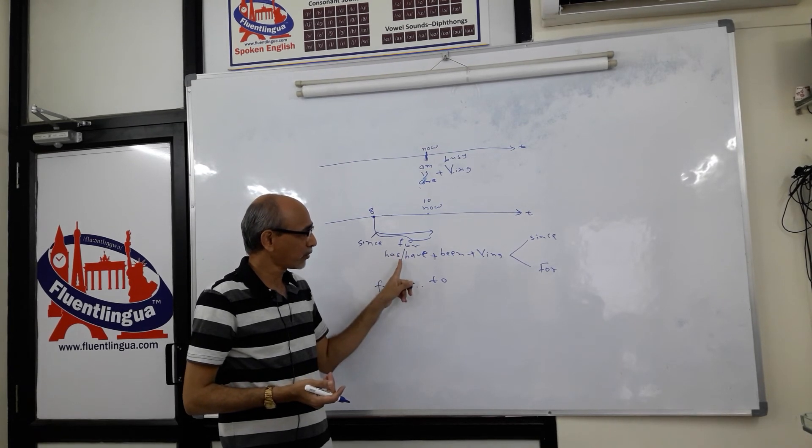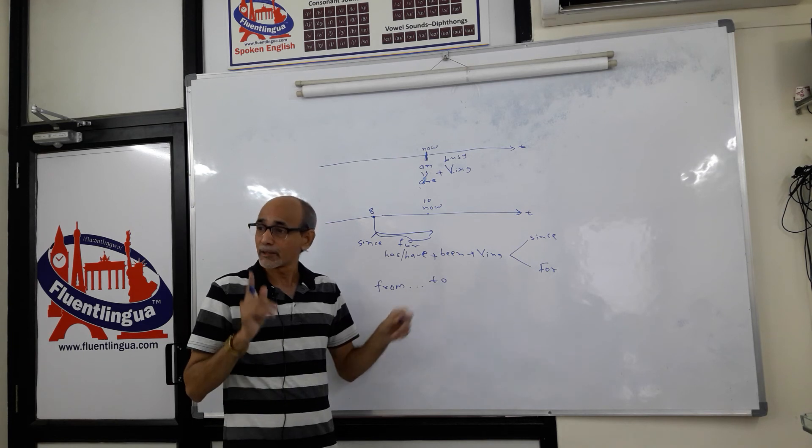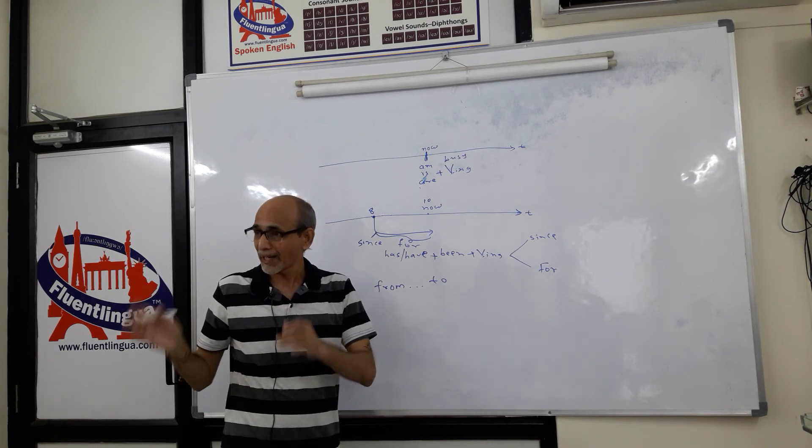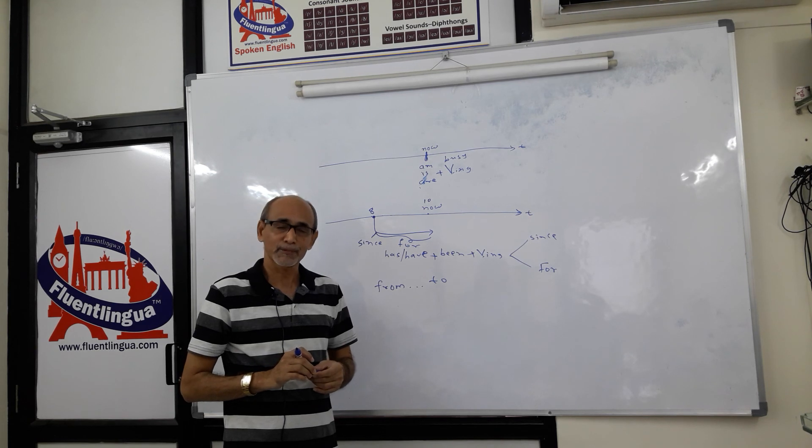So basically has been or have been, sorry, has or have plus past participle. That gives you past to present situation. Is that clear? Thank you.